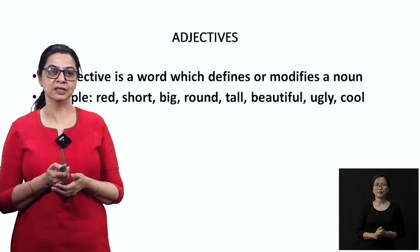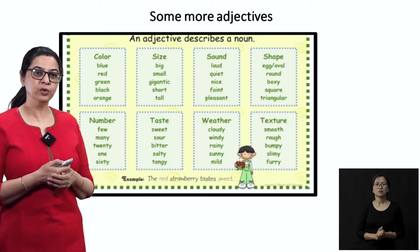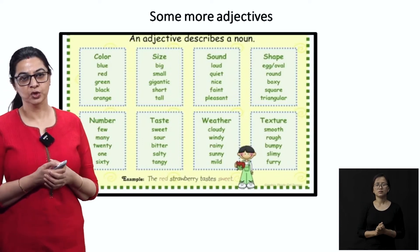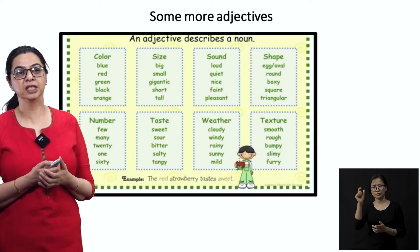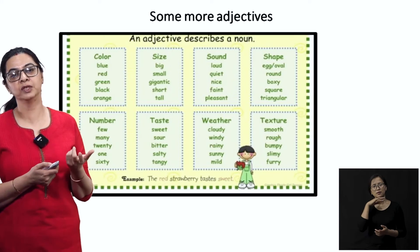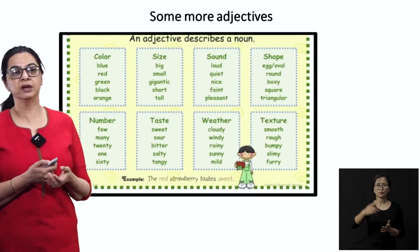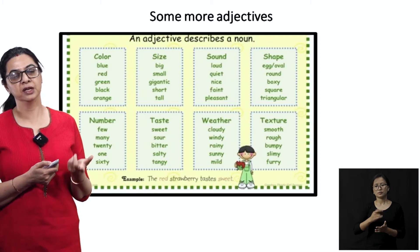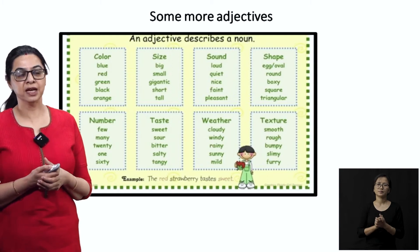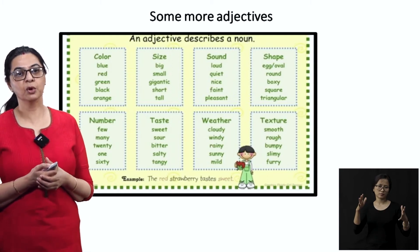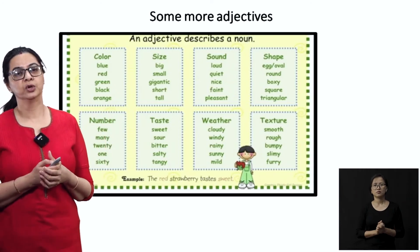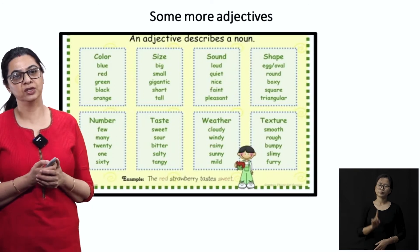So if you were to describe a colour and wanted to use an adjective, it could be blue, red, green, black, or orange. Any colour you use in a sentence will always be your adjective. If I say I am wearing a red kurta today — red is how I am defining my kurta and kurta is a noun. If I am going to define a size, it can be big, small, gigantic, short, or tall — all these words are known as adjectives.